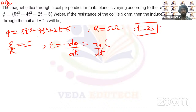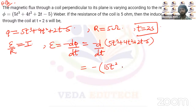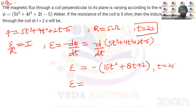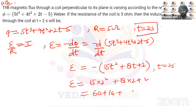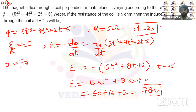Differentiating: dΦ/dt = 15t² + 8t + 2, so EMF = −(15t² + 8t + 2). At t = 2 s: |EMF| = 15(4) + 8(2) + 2 = 60 + 16 + 2 = 78 volts. Current = 78/5 = 15.6 amperes through the coil.